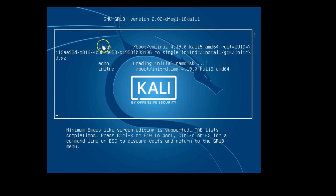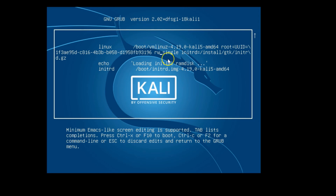Now you can see the Linux section. You will notice the text 'ro' here. You need to replace the 'O' with 'W', changing 'ro' to 'rw'. Move your cursor to that position and make the replacement — you can see it is now replaced.